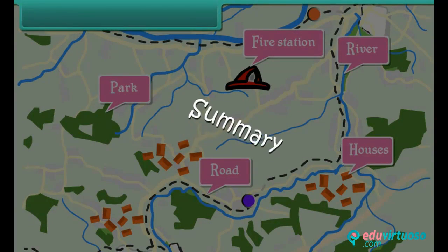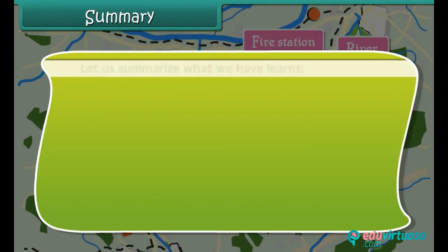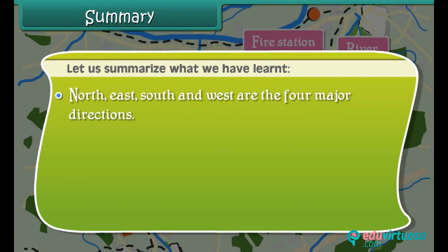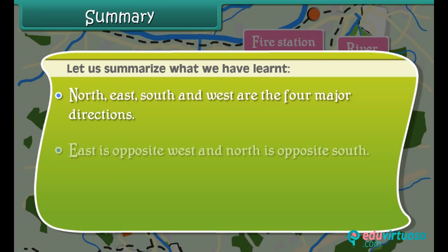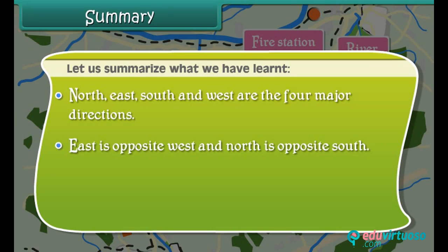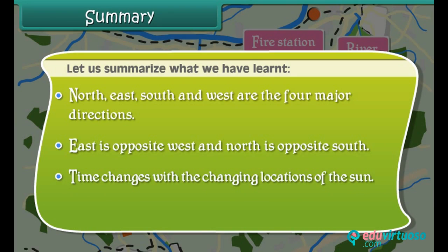Summary: Let us summarise what we have learnt. North, East, South, and West are the four major directions. East is opposite West, and North is opposite South.